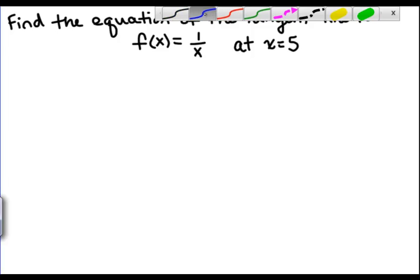Now we're going to use what we've learned about finding slopes of tangent lines to actually find the equation of the tangent line. So in the problem that we're given here, it asks us to find the equation of the tangent line to f of x equals 1 over x at x equals 5.